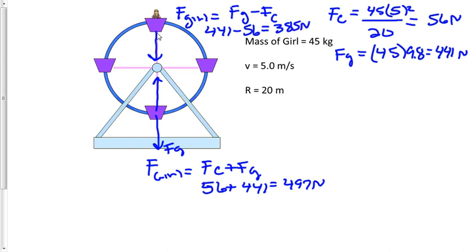The chair won't have to put as much force on her because gravity is helping in this situation. Only 56 newtons is needed to make her go in a circle, so she's going to feel like she weighs 385 newtons.